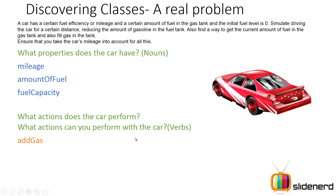What actions does the car perform, or what actions can you perform with the car? For that, find the verbs. The problem says reducing the amount of gasoline in the tank, find a way to get the current amount of fuel, and fill gas in the tank — that gives us our first action: add gas to the car. What else can you do? You can drive the car, which is our main problem: simulate driving the car for a certain distance. These are the properties and actions associated with the main car object.